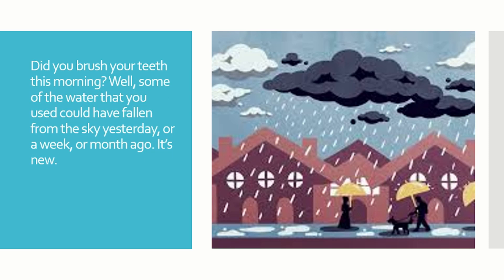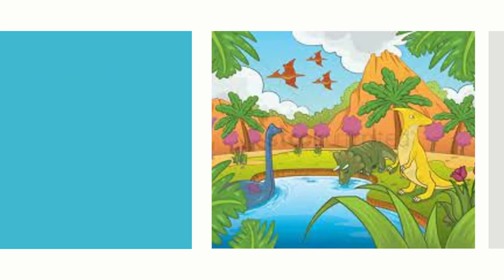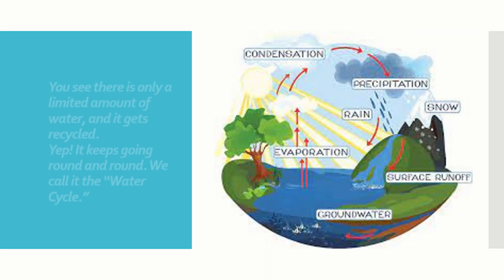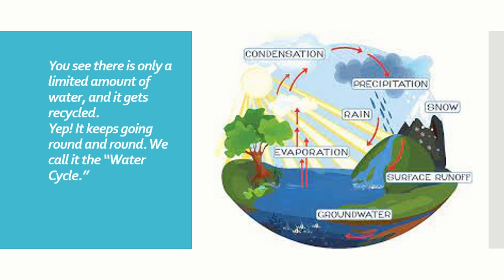Did you brush your teeth this morning? Well, some of the water that you used could have fallen from the sky yesterday, or a week or month ago — it's new. But some part of that water is very old and was around at the time of the dinosaurs, or even longer. Or maybe it's a little newer, like from the time when the Pharaohs were building pyramids. You see, there is only a limited amount of water and it gets recycled — it keeps going round and round. We call it the water cycle.